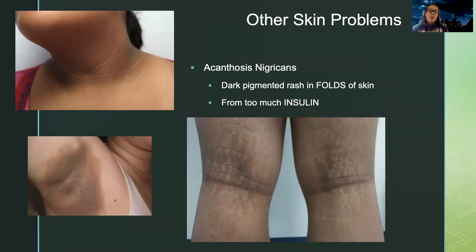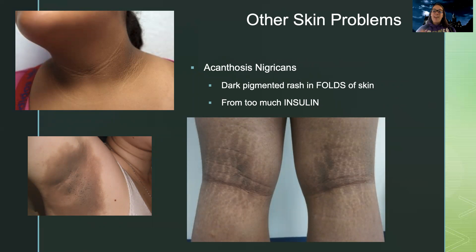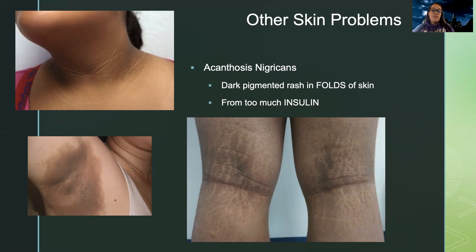Another skin finding — more of an assessment sign than a problem — is dark pigmented areas in the folds of the skin, most commonly in the armpits, the back of the neck, and behind the knees. This is actually a sign of insulin resistance, where insulin is collecting in the skin folds. This is something we can see as an early sign that diabetes is either present or coming — so it's worth noting in your assessment, even if the patient doesn't yet have a diabetes diagnosis.